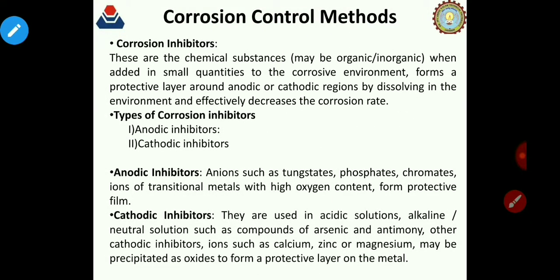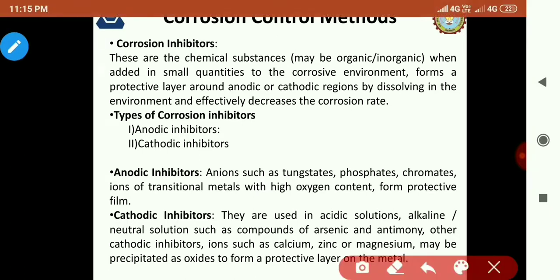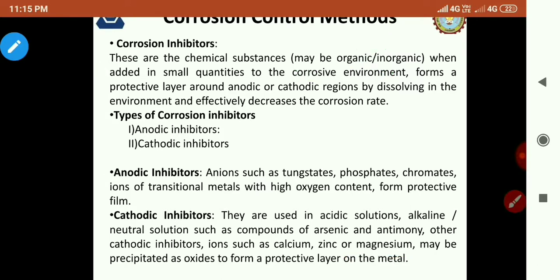Coming to corrosion control methods — when we talk about changing the corrosive environment, we add organic or inorganic substances which dissolve and form anodic or cathodic protective coverings. These are called cathodic and anodic inhibitors. These are chemical substances, organic or inorganic, which when added in small quantities to a corrosive environment, form a protective layer.